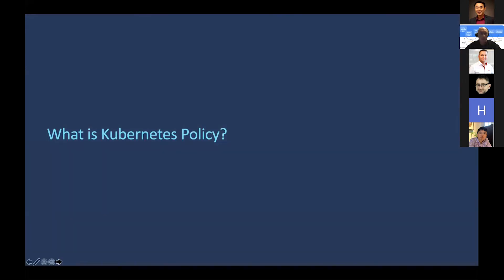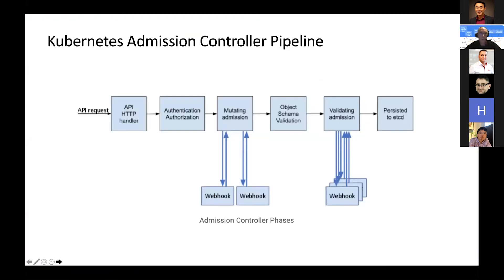So what is Kubernetes policy? This is the Kubernetes admission controller pipeline. Every request coming into Kubernetes goes through an authentication and authorization process, then through two webhooks: the mutating admission webhook and the validating admission webhook. This is our chance to interject into that pipeline and implement policy — for example, ensuring no containers run as root, blocking it up front rather than catching it after deployment.